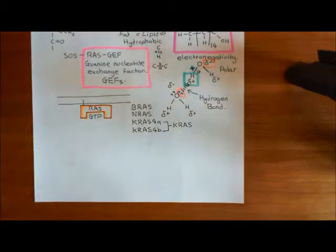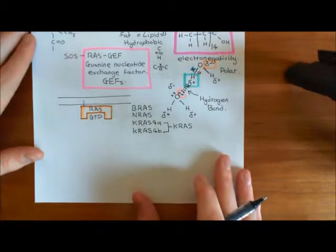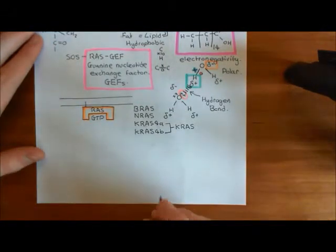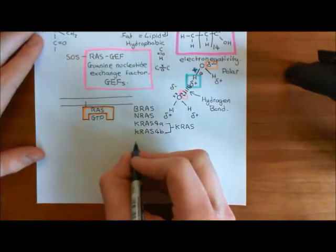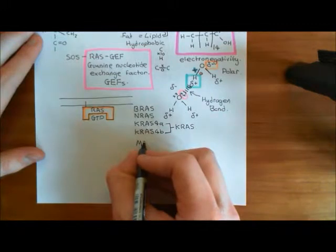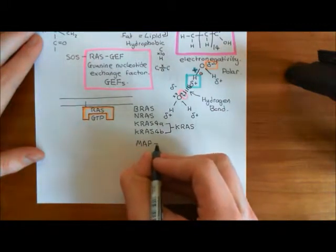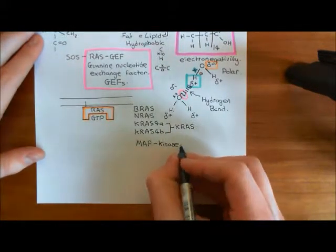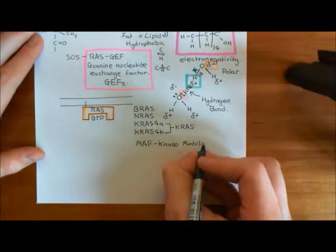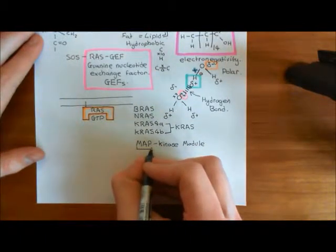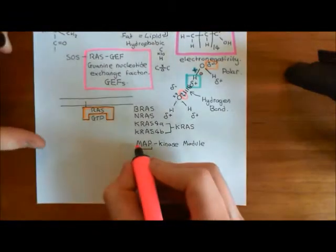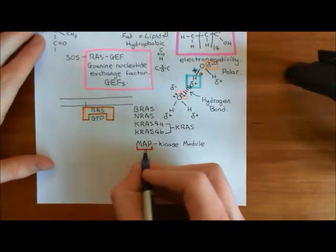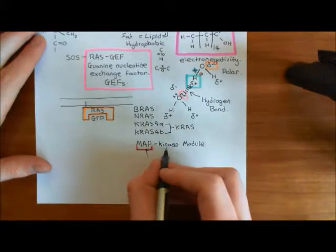We now want to look at what the RAS monomeric G protein is going to activate once it's in the ON state. It is going to activate something known as the MAP kinase module — a cascade of kinases. MAP stands for mitogen-activated protein, so in full, this is the mitogen-activated protein kinase module.